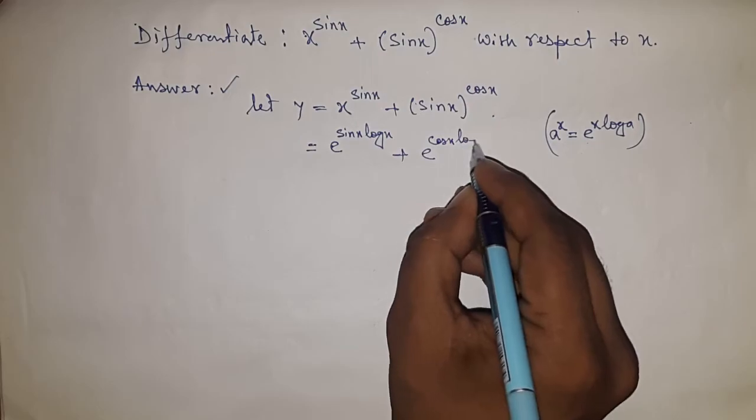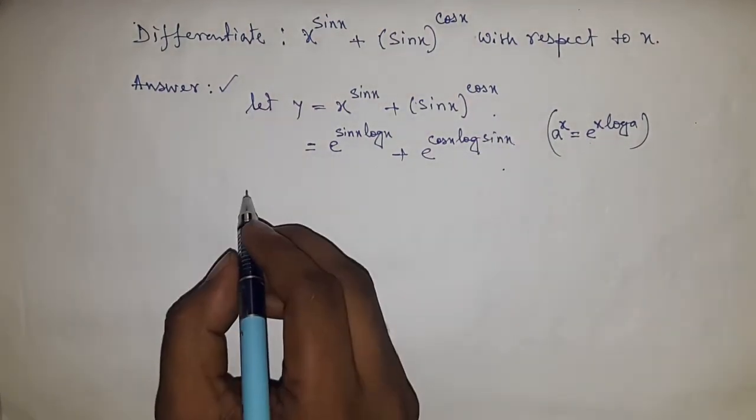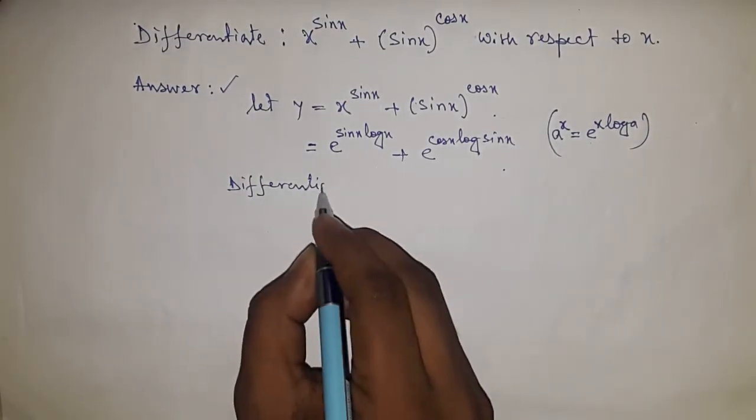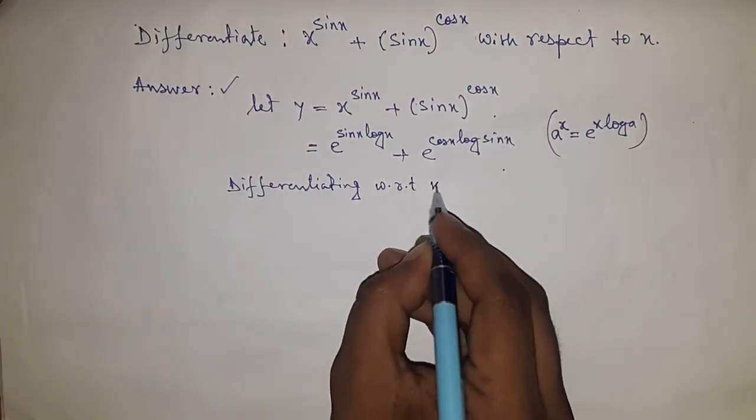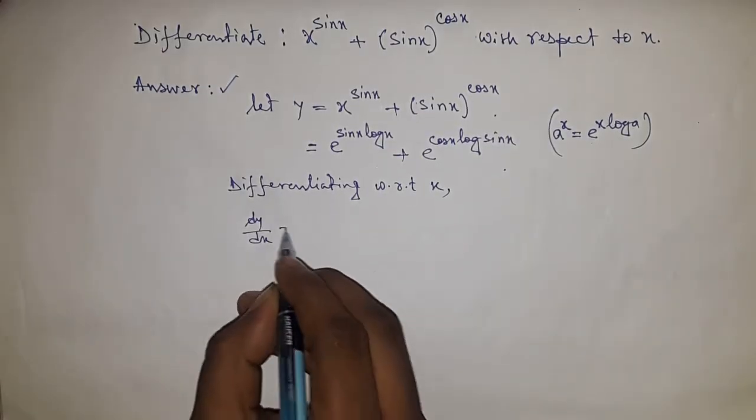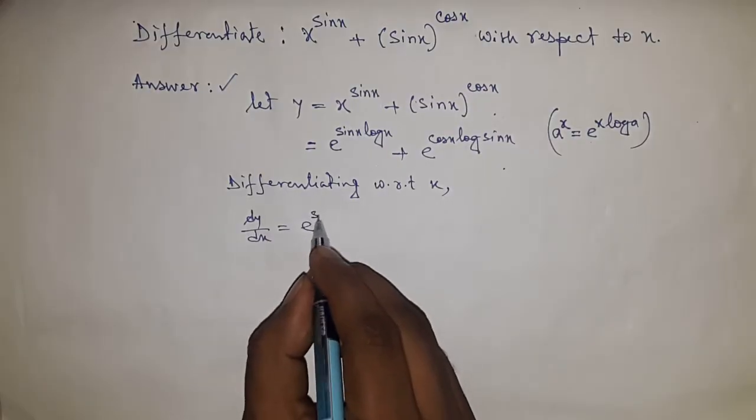Now differentiating the above function with respect to x, we have dy over dx equal to... We know that the derivative of e to the power x equals e to the power x.